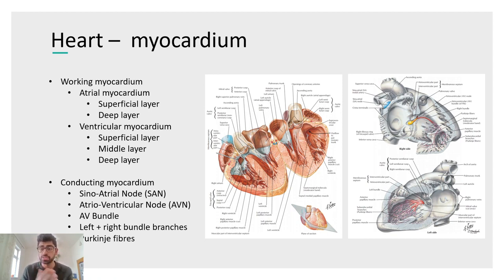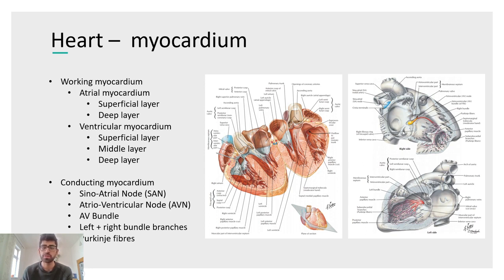The sinoatrial node is located in the right atrium, adjacent to the opening of the superior vena cava. From there, the signal passes to the atrioventricular node, also in the right atrium.